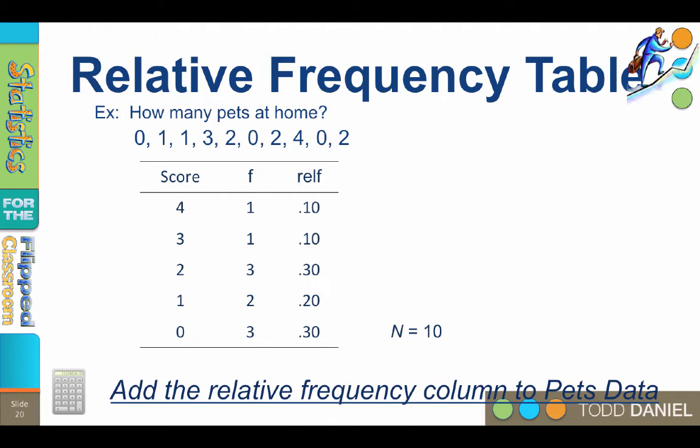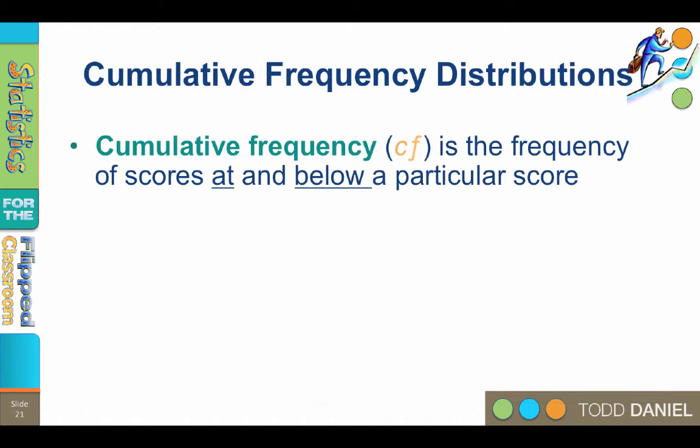If you have not already, add these numbers to your pets data table in your notes. Now we will add a column for cumulative frequency. The word cumulative means to accumulate. It refers to the frequency of scores at or below a particular score.